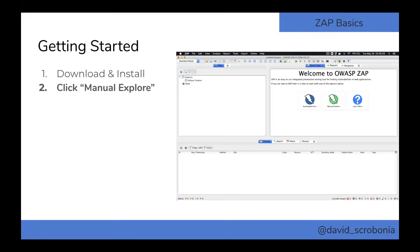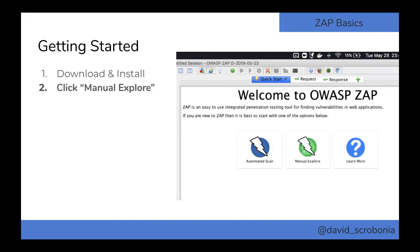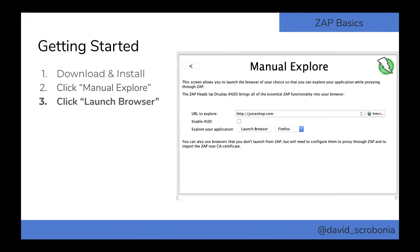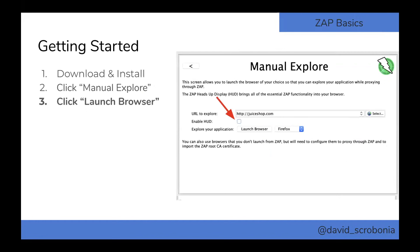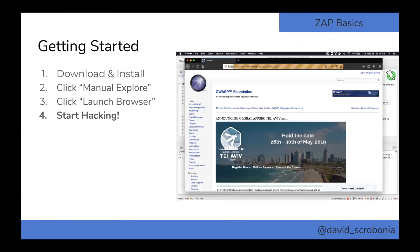Once you start up ZAP after installing it, you'll see the quick start menu. We just want to start proxying, so we use the manual explorer option. Choose manual explorer, punch in the URL you want to start testing against. Make sure the HUD button is disabled if you don't want to use the HUD. By pressing launch browser, it'll automatically launch Firefox or Chrome, pre-configured to be proxying through ZAP — no SSL certificate import needed, though you can still do that manually if you prefer.